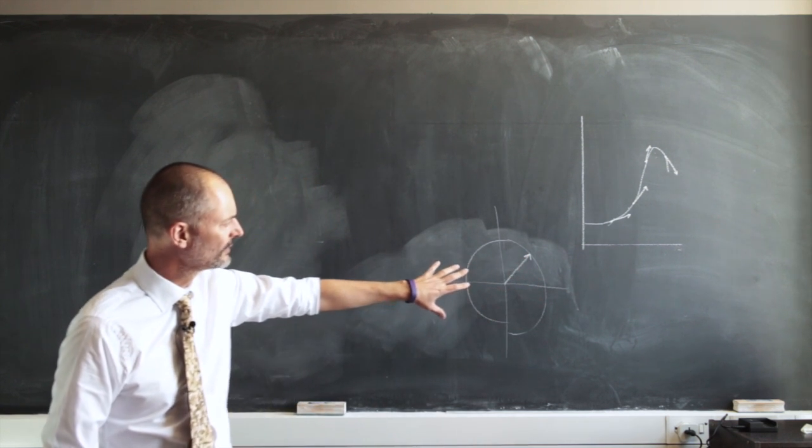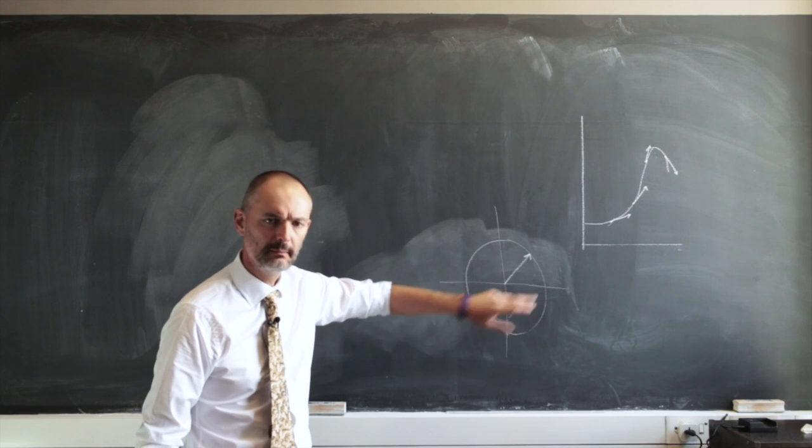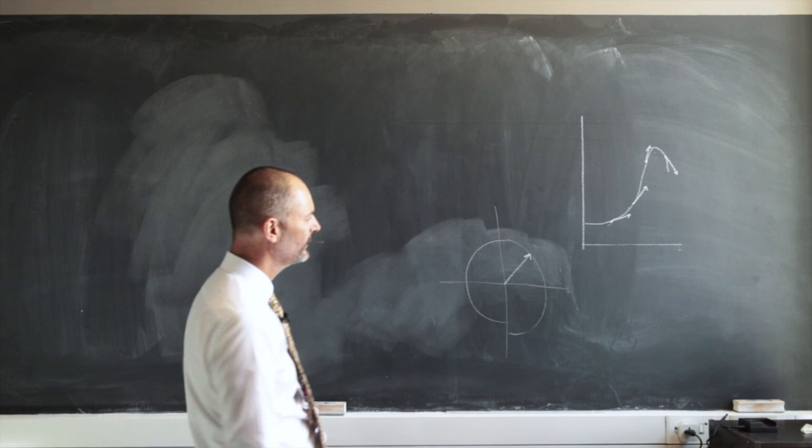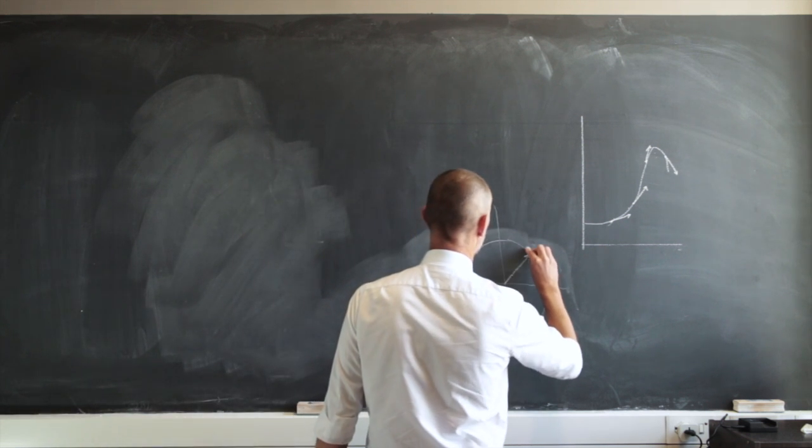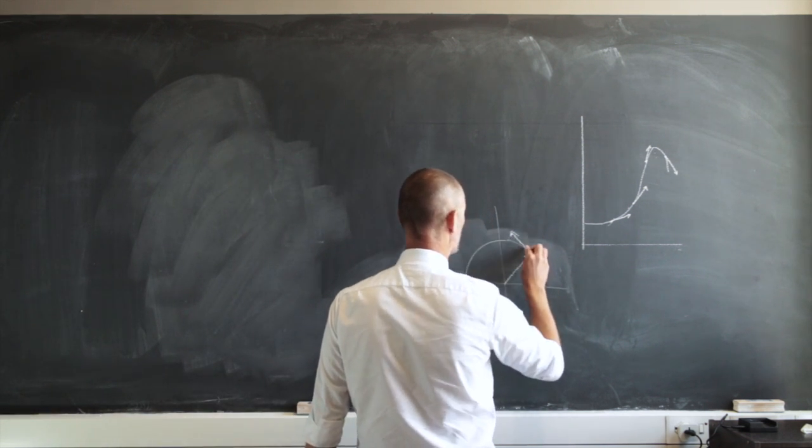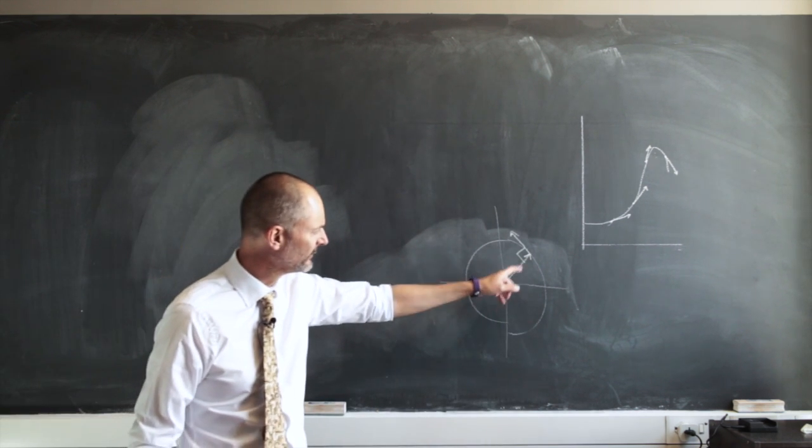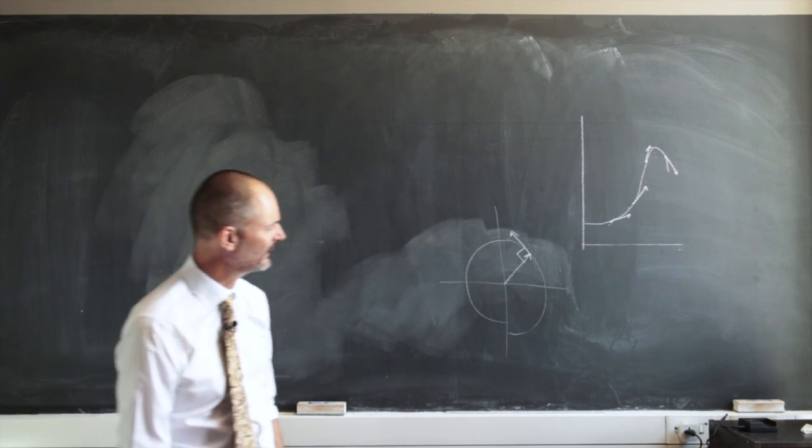in this initial reference frame, the magnitude of this position vector never changes. And as such, its first derivative, the velocity vector at any point, is always going to be perpendicular to that. The position vector and the velocity vector are always going to be perpendicular.